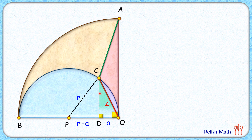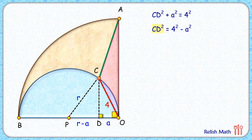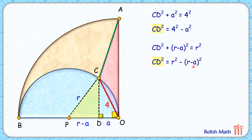In the first triangle, we'll get CD² + a² = 4², giving us CD² = 4² − a². Now from the second triangle, CD² + (r − a)² = r², so CD² = r² − (r − a)². Comparing these two values, we get 4² − a² = r² − (r − a)².